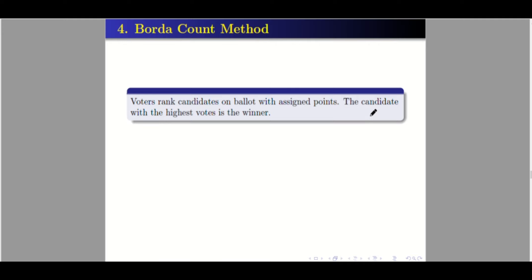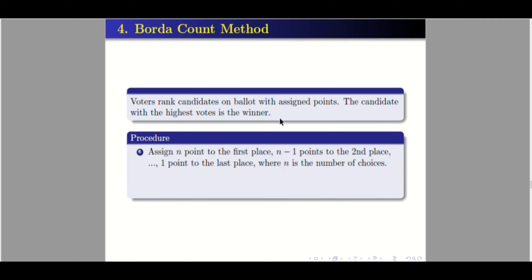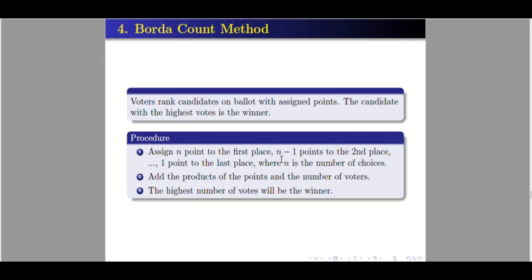Now let's go to the fourth method: the Borda count method. Voters rank candidates on a ballot with assigned points. The candidate with the highest total points is the winner. Assign n points for first place, n minus 1 for second place, down to 1 point for last place, where n is the number of choices. Then add the products of the points and the number of voters.